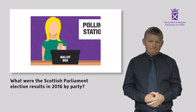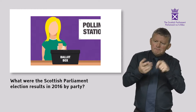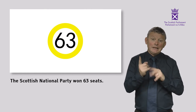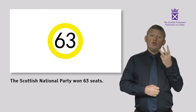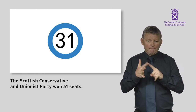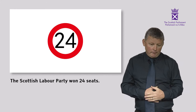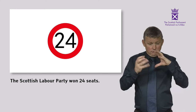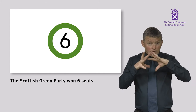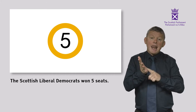What were the Scottish Parliament election results in 2016 by party? The Scottish National Party won 63 seats. The Scottish Conservative and Unionist Party won 31 seats. The Scottish Labour Party won 24 seats. The Scottish Green Party won 6 seats. The Scottish Liberal Democrats won 5 seats.